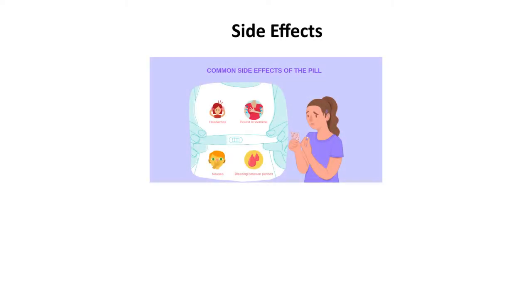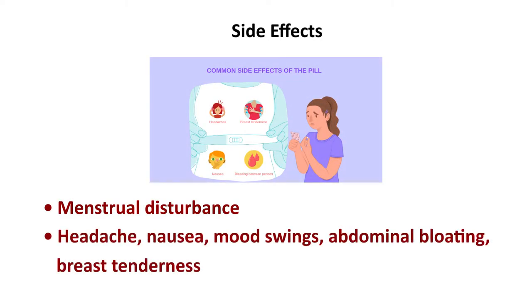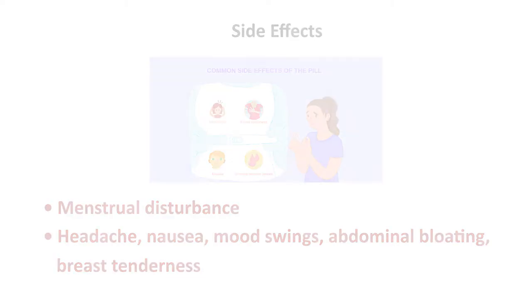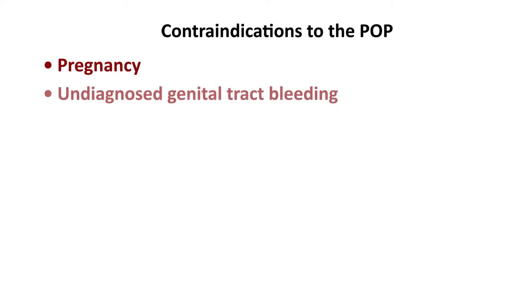Side effects of progesterone-only pills include menstrual disturbances, headache, nausea, mood swings, abdominal bloating, and breast tenderness. Contraindications for progesterone-only pills include pregnancy, undiagnosed genital tract bleeding, and severe arterial diseases.